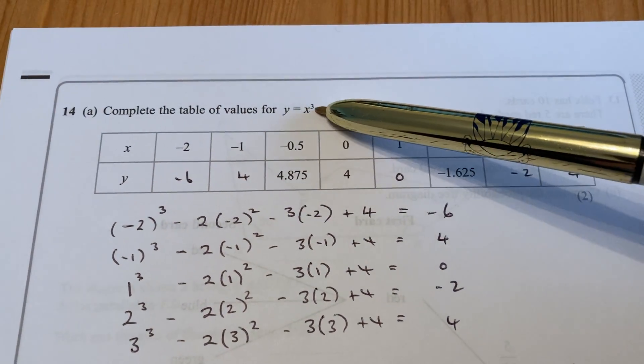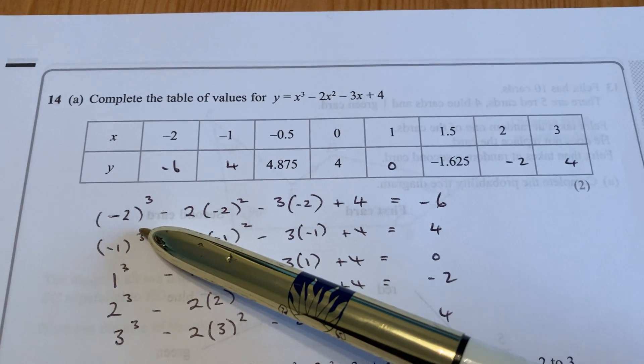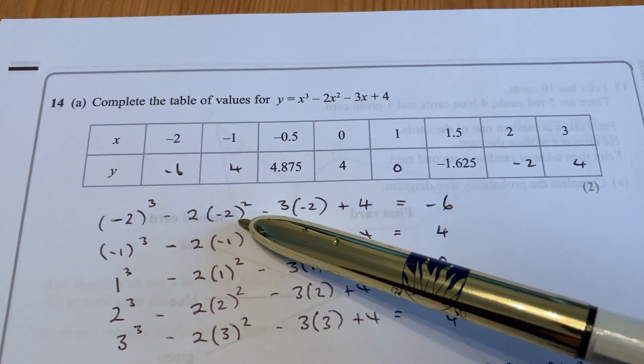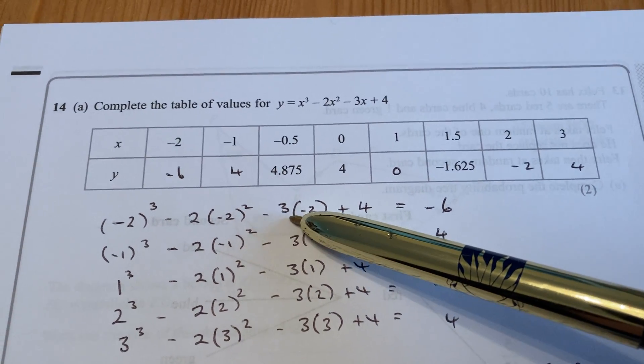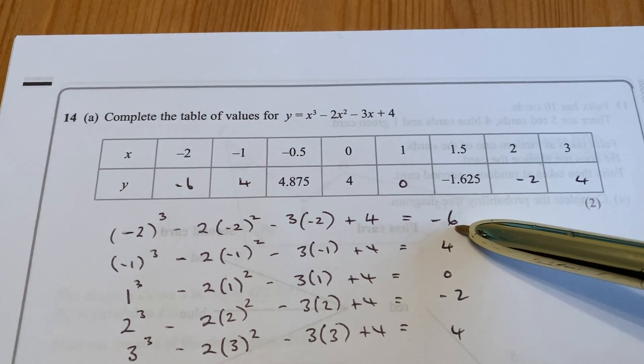-2 gets substituted in here for x, so the equation you would need to type in your calculator would be (-2)³ - 2 × (-2)² - 3 × (-2) + 4. That answer comes out to be -6.